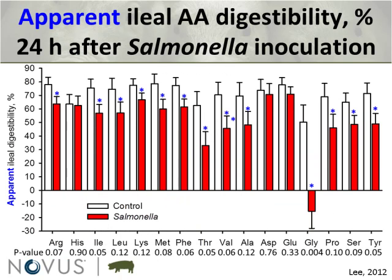The first thing to show is apparent ileal digestibility. In white bars are control non-infected animals; red bars are salmonella-infected animals. There is a lot of variation, but if you apply a threshold of p ≤ 0.15, just about every single amino acid shows significantly lower digestibility coefficients in the infected compared to uninfected animals.